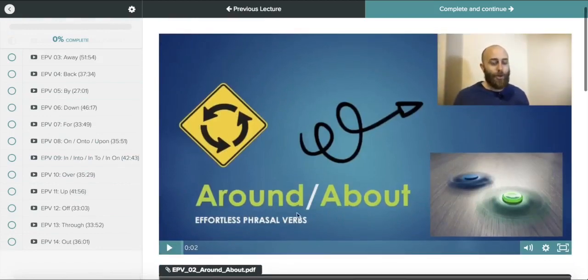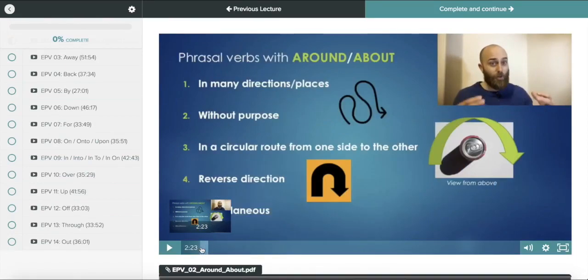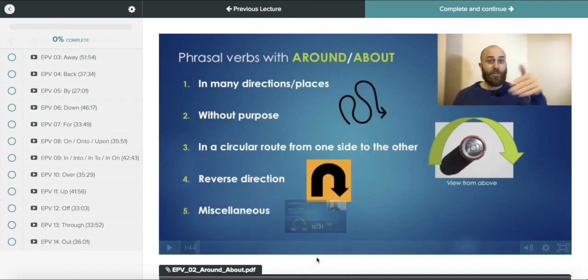The particle is the thing that often modifies the verbs the most. And there tends to be an underlying pattern that you can come to understand to help you intuitively create phrasal verbs, whether or not you've even seen or heard those phrasal verbs before. For instance, here with around and about, it can be used here for at least four different things that are patterns that you can learn: in many directions or places, without purpose, in a circular route from one side to another, and reverse direction.